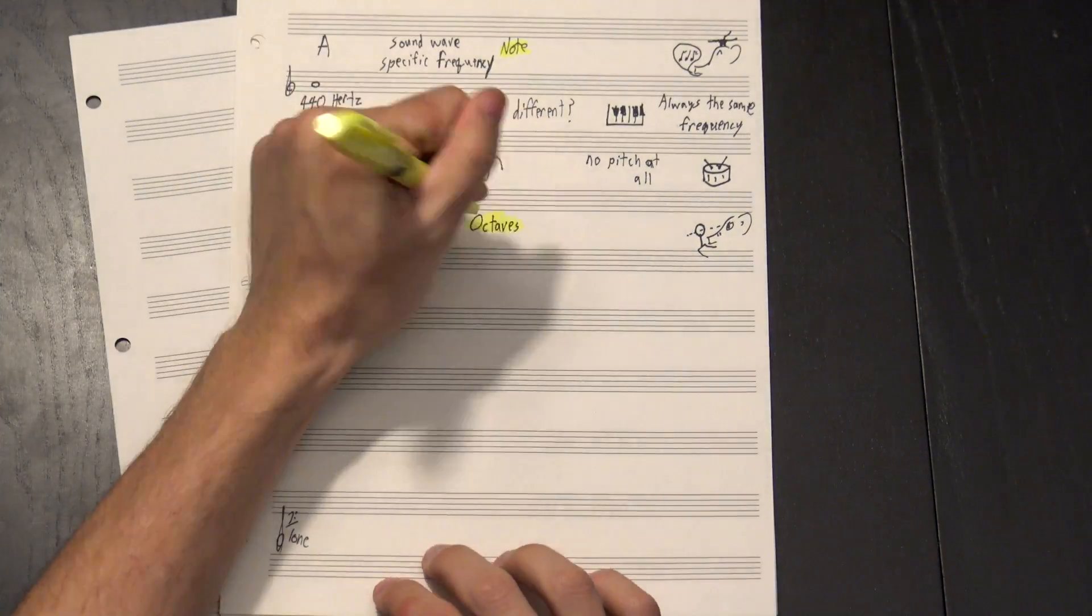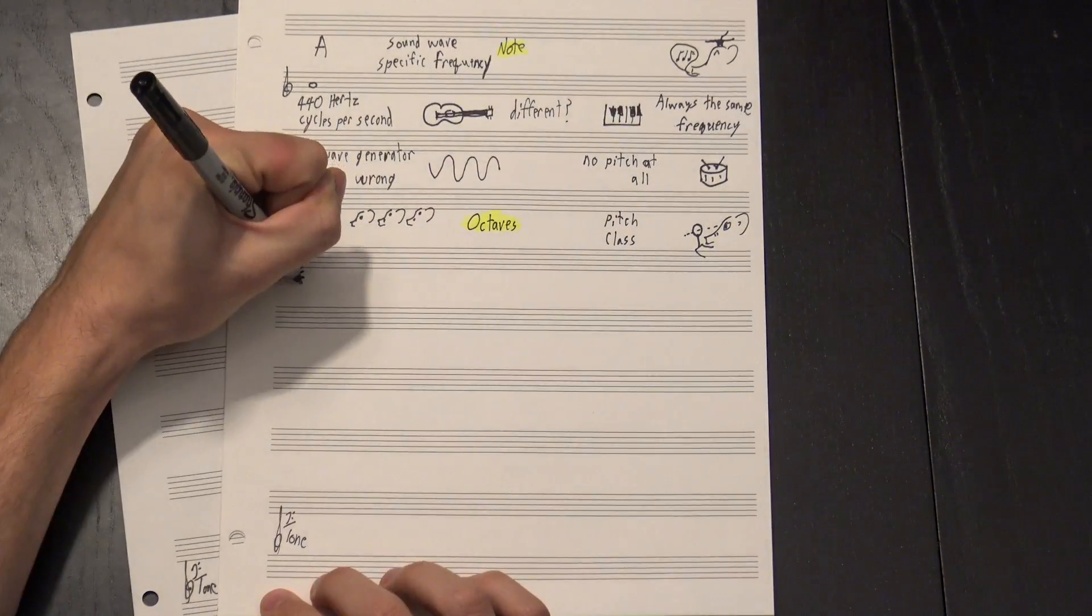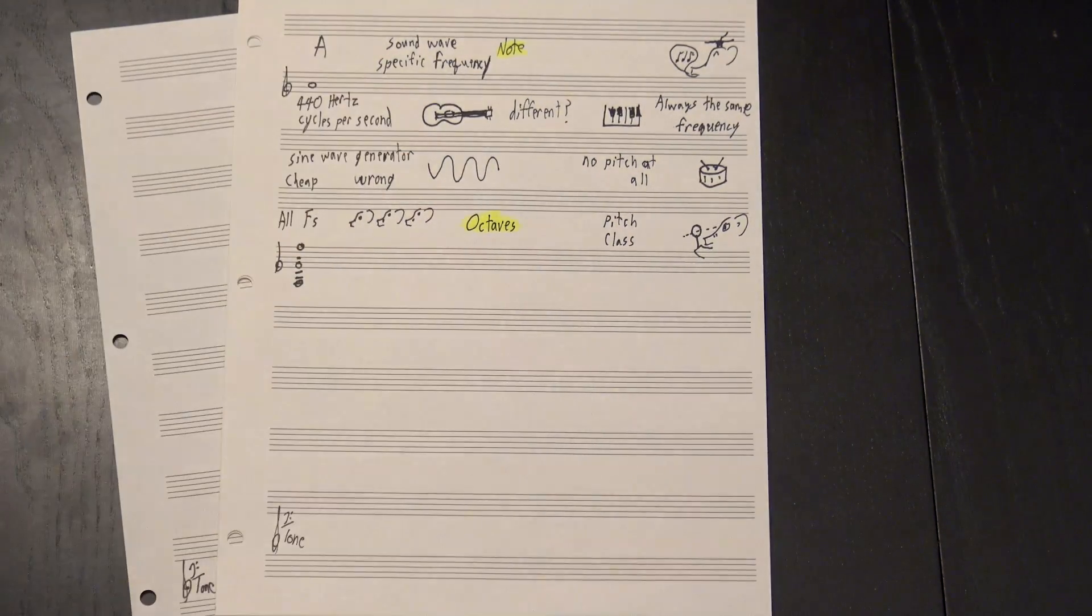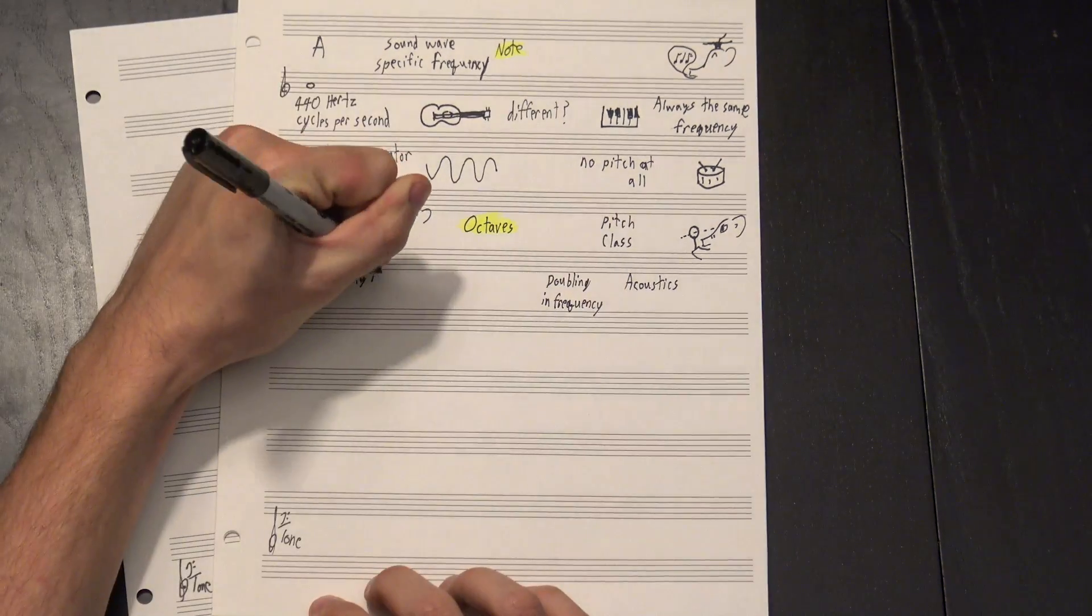To get to the bottom of this, we have to talk about octaves. As you may know, notes an octave apart sound so similar that we hear them as a single pitch class, so this, this, and this are all Fs. Acoustically speaking, an octave is a doubling in frequency, but what makes that so special?